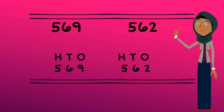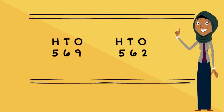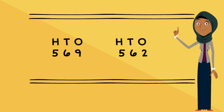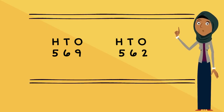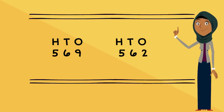Now, remember, to compare, we need to look at the first digit on the left-hand side of each number. These two numbers both have 5 hundredths, and they are the same. Now we need to move to the tenths — they both have 6 tenths too.